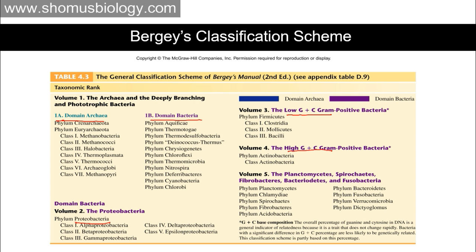For example, if you are working with an unknown bacterium and you know it is gram-positive with low GC content, you go directly to volume 3, which carries information only about bacteria with those features. This way, by picking the volume carrying that particular property, you avoid having to go through all bacteria in a single volume, which would make it very difficult to find the correct one.